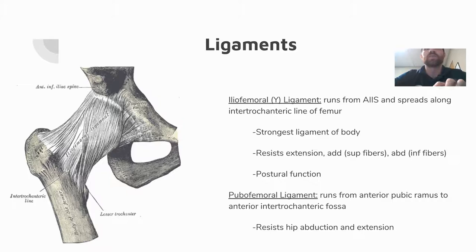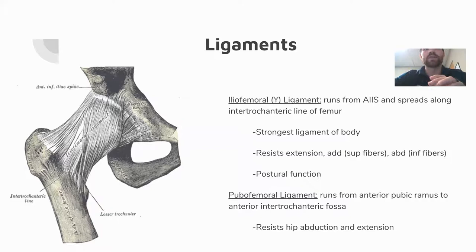The capsule runs from the base of the femoral neck to the labrum and is made up of fibers in three different directions, spiraling around the femoral head, which adds to hip stability. An instructor described both the hip and shoulder stability complexes as being like a wound-up washcloth — ligaments all work together to provide stability, and the capsule's spiraling fibers contribute more than the joint structure alone allows.